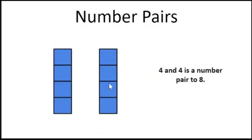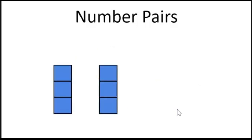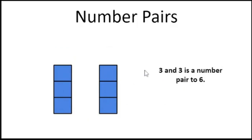These two are the same — this is doubled. Let's count them: one, two, three, four. One, two, three, four. Four and four is a number pair to eight. We have doubles again: one, two, three. One, two, three. Three and three is a number pair to six.